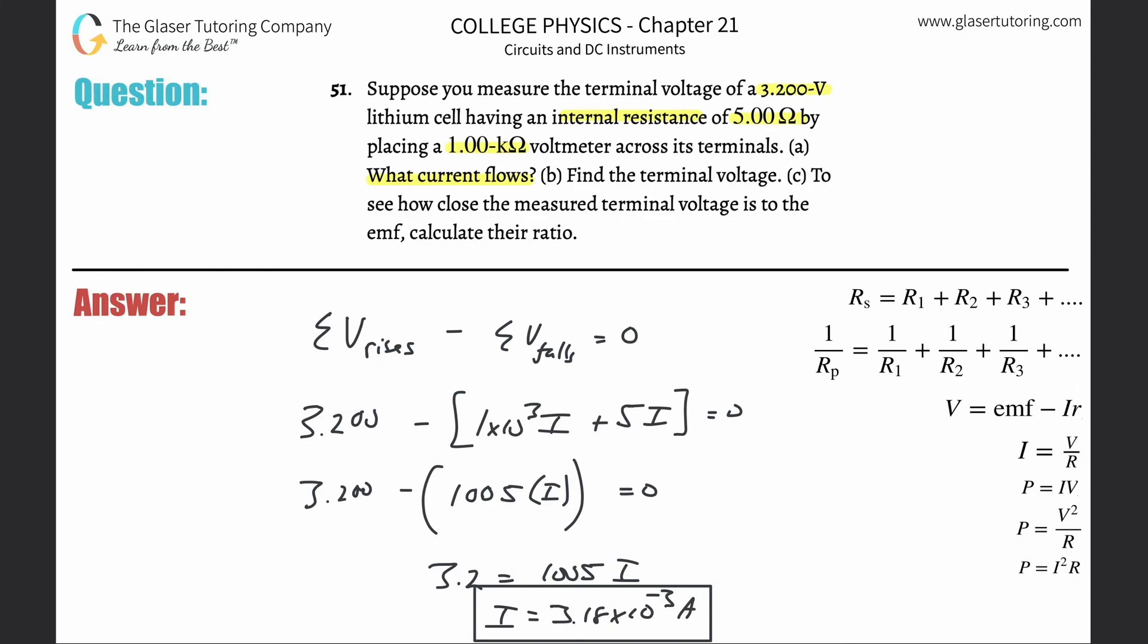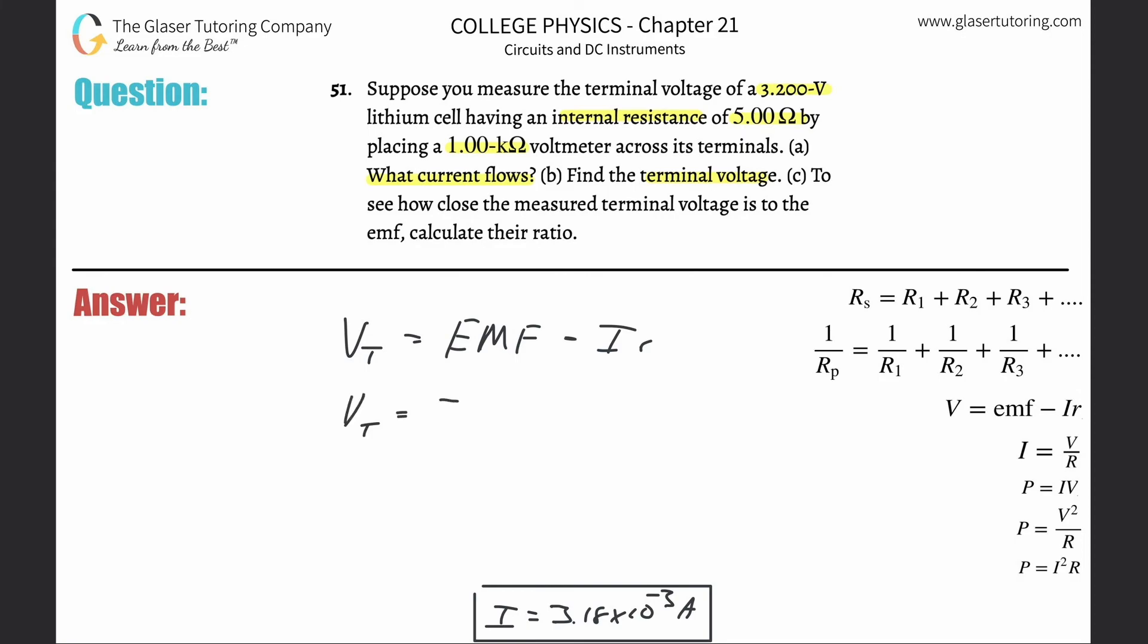Now it's asking for us to find the terminal voltage. So what we need to do is use that terminal voltage formula. The terminal voltage formula is VT is going to be equal to the battery's EMF minus the current that flows multiplied by its internal resistance. So the battery's EMF was 3.200, minus the current of 3.18 times 10 to the minus third, multiplied by that internal resistance of five. We get 3.2 minus 3.18 times 10 to the minus three, using the exact values in the calculator, we get a value of 3.184. And that takes care of letter B.